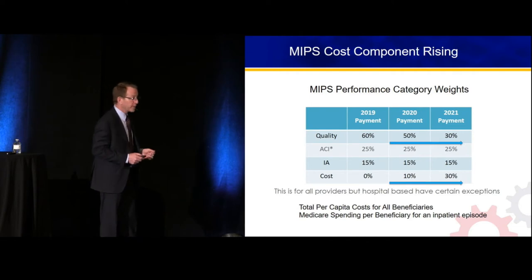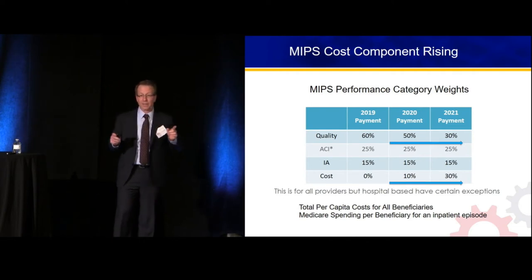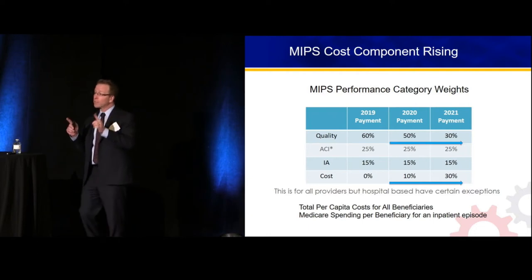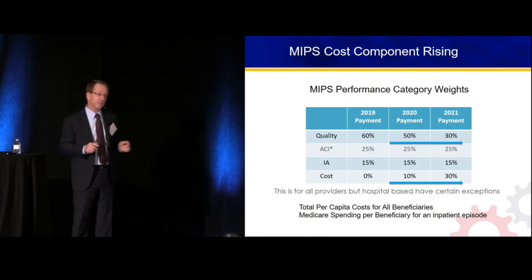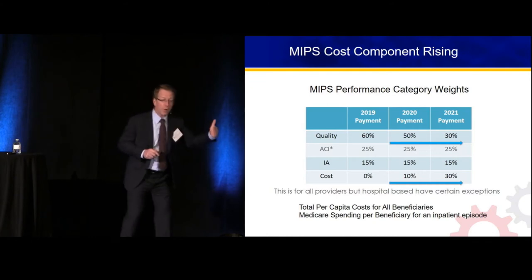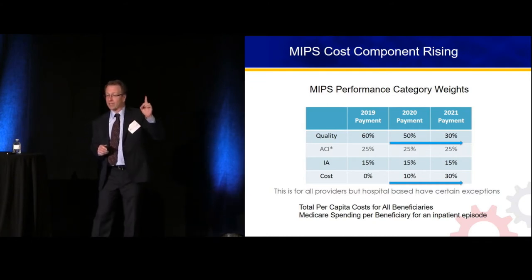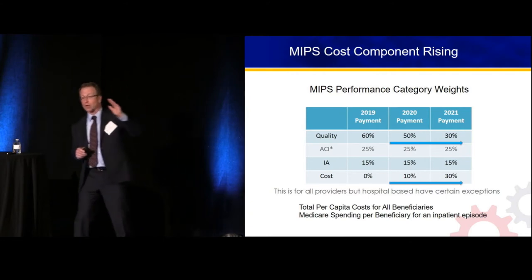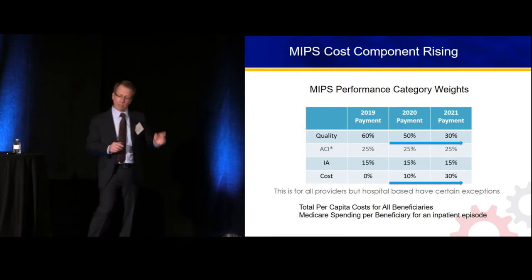Then we've got improvement activities, and right out there — cost. That's the theme, and that's where it relates to benchmarking and utilization processes. The cost component the first year of the program was at zero, now it's at 10%, and by statute it is required ultimately to go to 30%, and that's proved challenging for CMS.